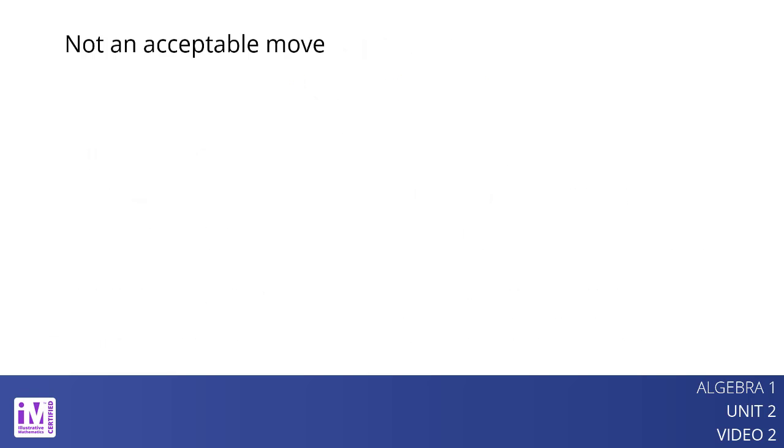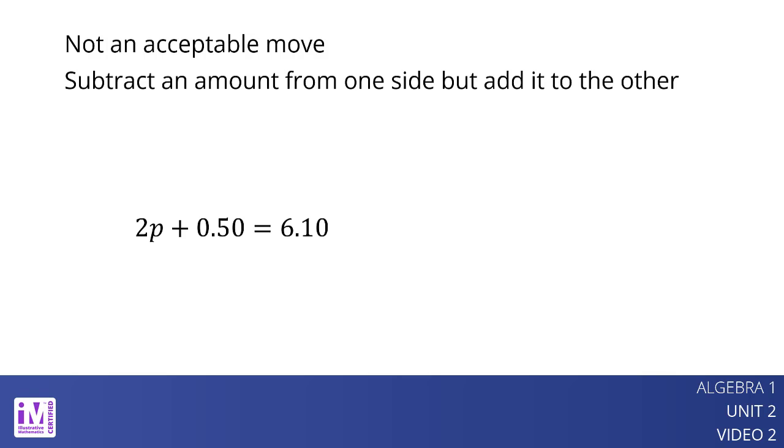Some moves are not acceptable in creating equivalent equations. What if you subtract an amount from one side but add it to the other? For example, if we subtract 0.50 from the left side but add 0.50 to the right side,